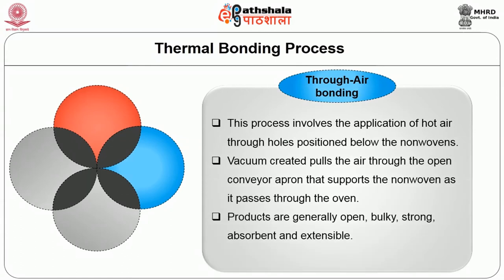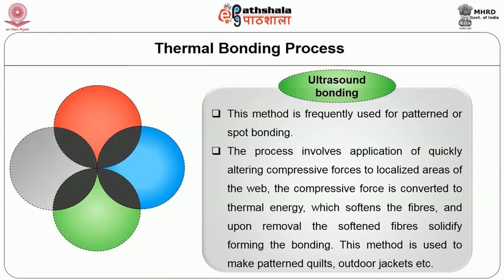Through-air bonding: this process involves the application of hot air through holes positioned below the non-wovens. Vacuum created pulls the air through the open conveyor apron that supports the non-woven as it passes through the oven. Products are generally open, bulky, strong, absorbent, and extensible. Ultrasound bonding: this method is frequently used for patterned or spot bonding. The process involves application of quickly alternating compressive forces to localized areas of the web. The compressive force is converted to thermal energy which softens the fiber, and upon removal, the softened fibers solidify forming the bond. This method is used to make patterned quilts, outdoor jackets, etc.